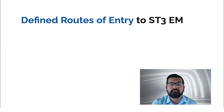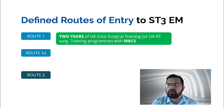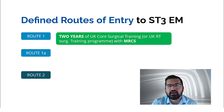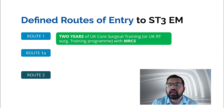What are these defined routes of entry to ST3 emergency medicine? There are basically three routes. Route one is if you have joined UK core surgical training. For example, if somebody starts CST, completes MRCS, and decides they don't want to pursue higher surgical training but want to do emergency medicine instead, they can join directly to DRE-EM at ST3 level. They don't have to go through ACCS-EM again. They then pass the relevant FRCEM primary and intermediate and become eligible to apply for higher specialty training in emergency medicine.